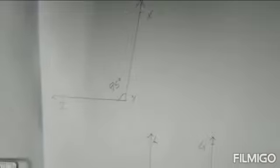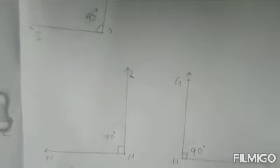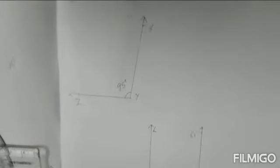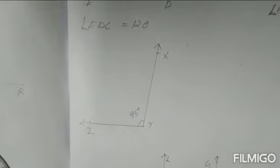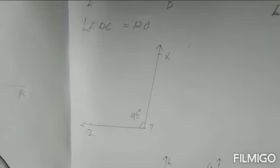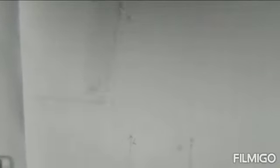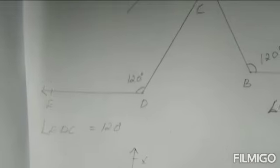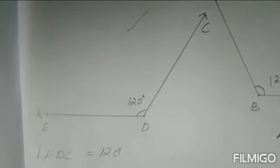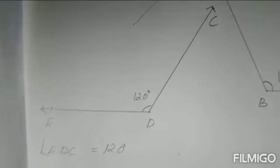Using a protractor is easier than using a set square. Last year using a set square you could draw only certain measures like 45 degrees and 30 degrees. But with a protractor you can draw angles of any measure — that is the convenience of a protractor. So if I ask you to draw a square, you can draw it too.